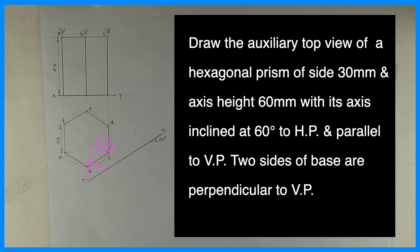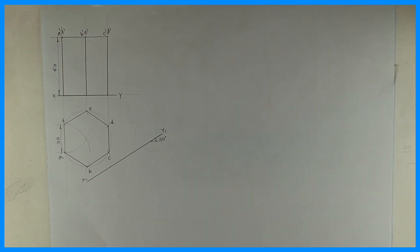Now, what do you mean by axis inclined at 60 degrees to HP? It is with vertical, so when you draw x1y1 that will be at 30 degrees. Always remember, whatever angle is given is always with the vertical. They have said two sides of the base are perpendicular to VP, so AF and CD are perpendicular to the XY line. We assume it is resting on HP, so we can draw the front view and top view.